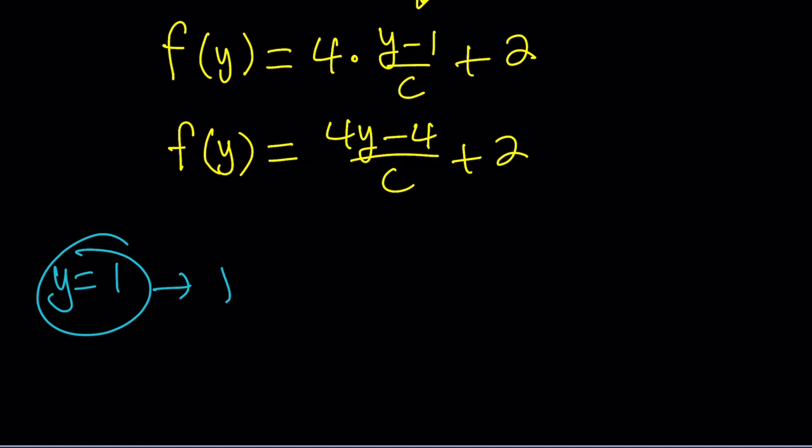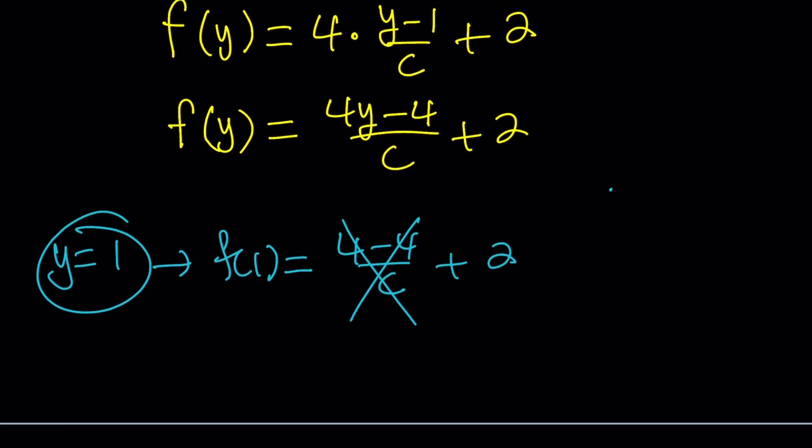That gives us f(1) equals 4 minus 4 divided by c plus 2. 4 minus 4 is 0. So, this is going to become 0 as long as c does not equal 0. And remember that because c is f(1), so f(1) should not be 0. That is our condition. But f(1) equals 2, so we know it's not 0. So, we don't even have to worry about it.